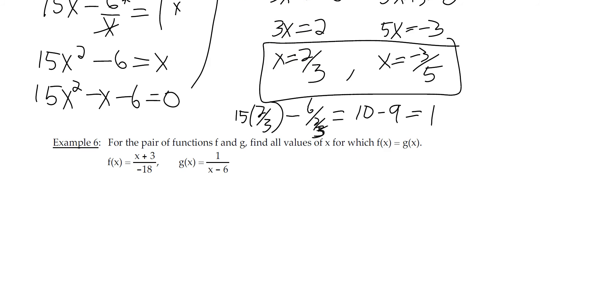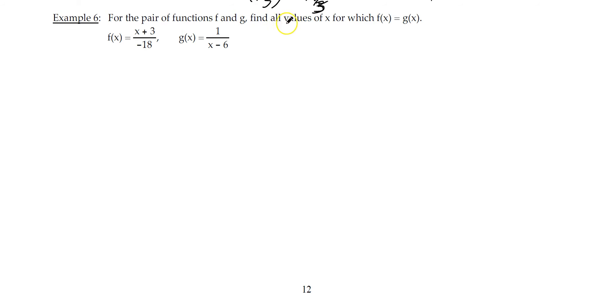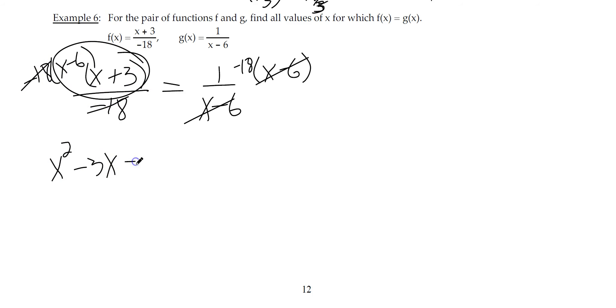Problem number 6. This is the last of this lesson that we're doing, and then we'll be done with this video. For the pair of functions f and g, find all values of x for which f of x equals g of x. So let's just multiply by negative 18, x minus 6. Those reduce. We have a little foiling here. That'll be x squared minus 3x minus 18. And here that's just negative 18. Keep in mind, this is multiplication, not 1 minus 18. Now the 18s reduce. So we have x squared minus 3x equals 0. And we can factor a greatest common factor out to get this factored to see that x equals 0 and x equals 3.